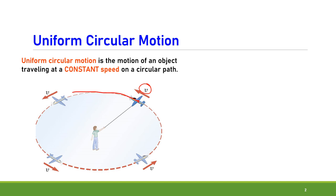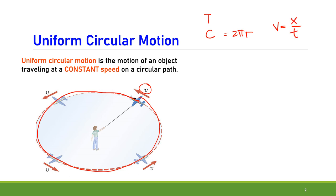One complete revolution of the airplane is equivalent to one circumference, and the time for one revolution is the period. The period can be represented by T, while circumference C in a circle equals 2πr. We can compute the velocity or speed of the airplane in a circular path using the formula for motion: velocity equals distance divided by time. Since the distance here is equivalent to the circumference of the circle, it can be written as C divided by the period, so the formula becomes v equals 2πr divided by T.